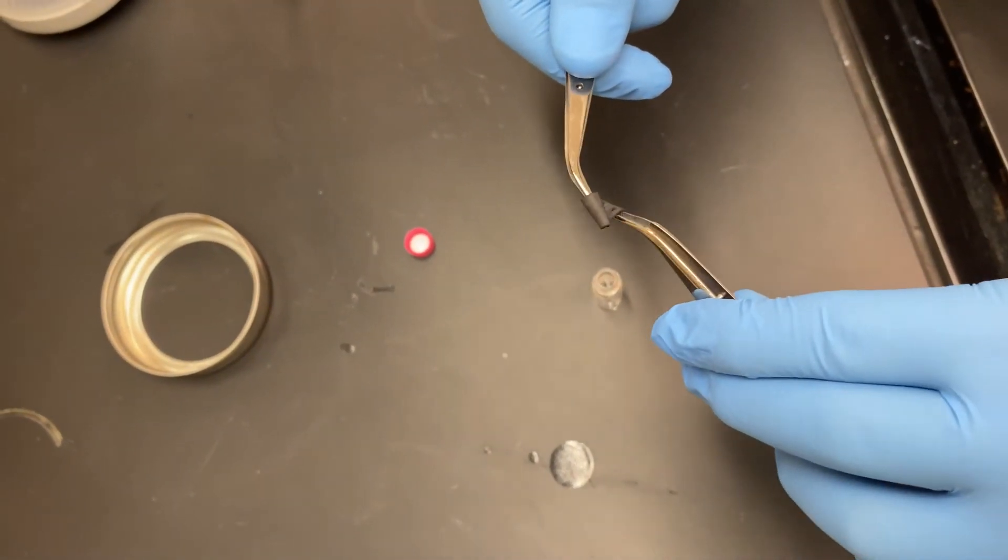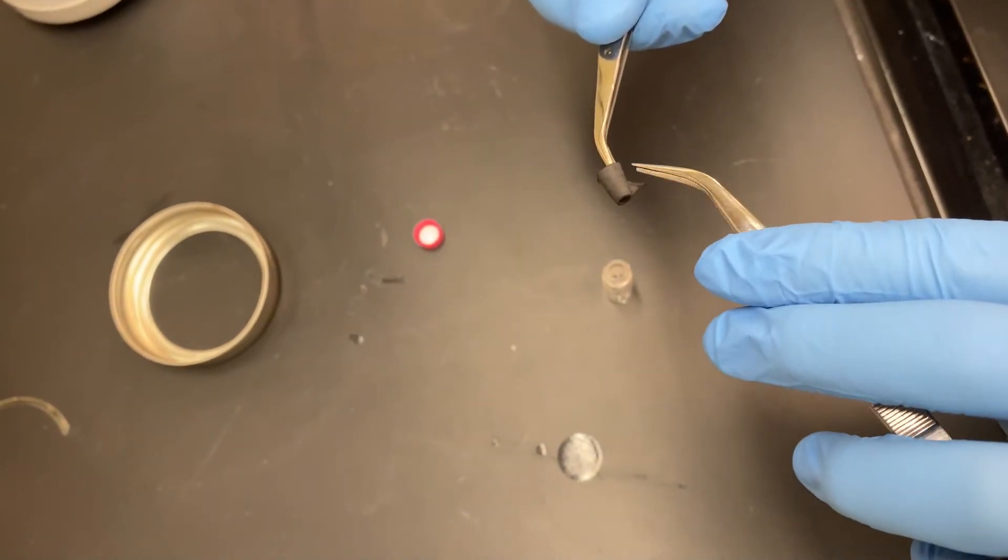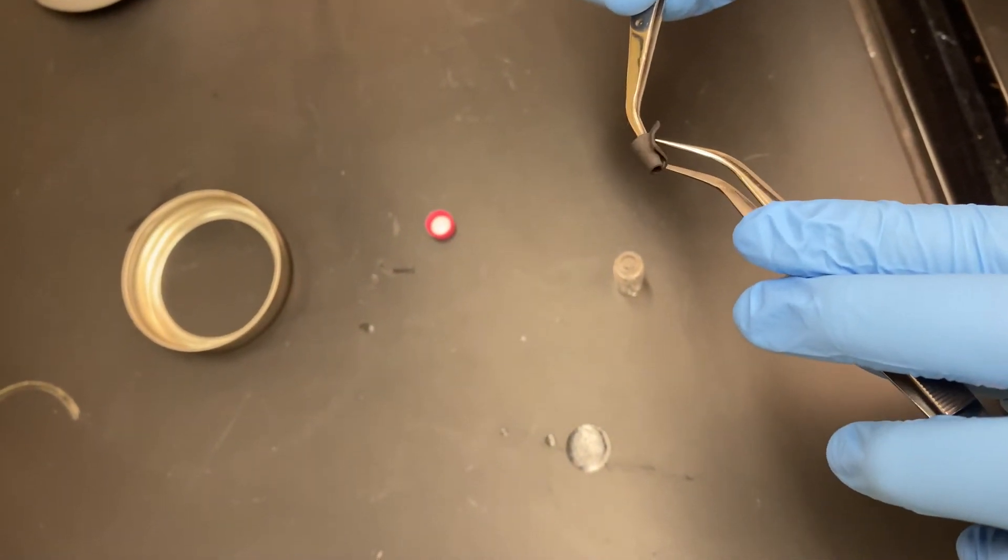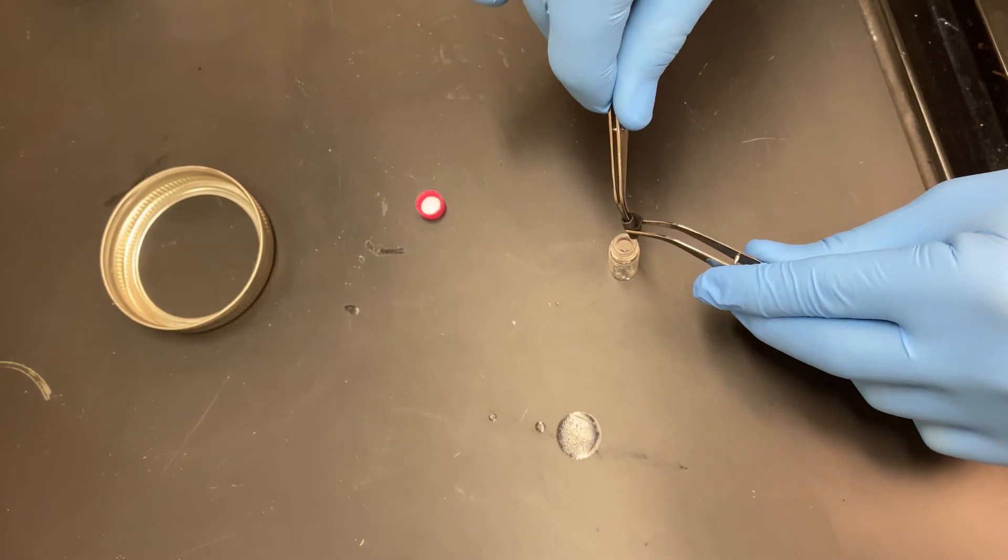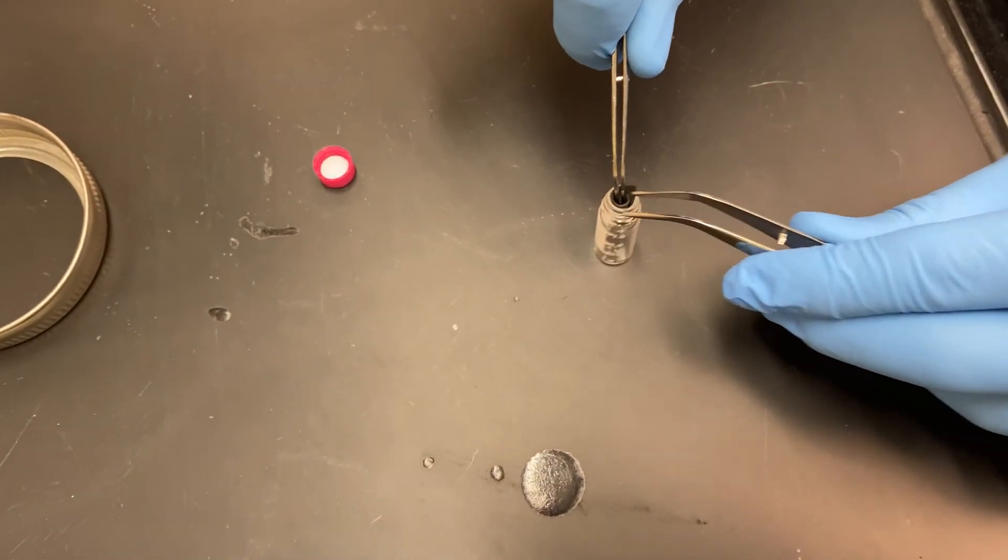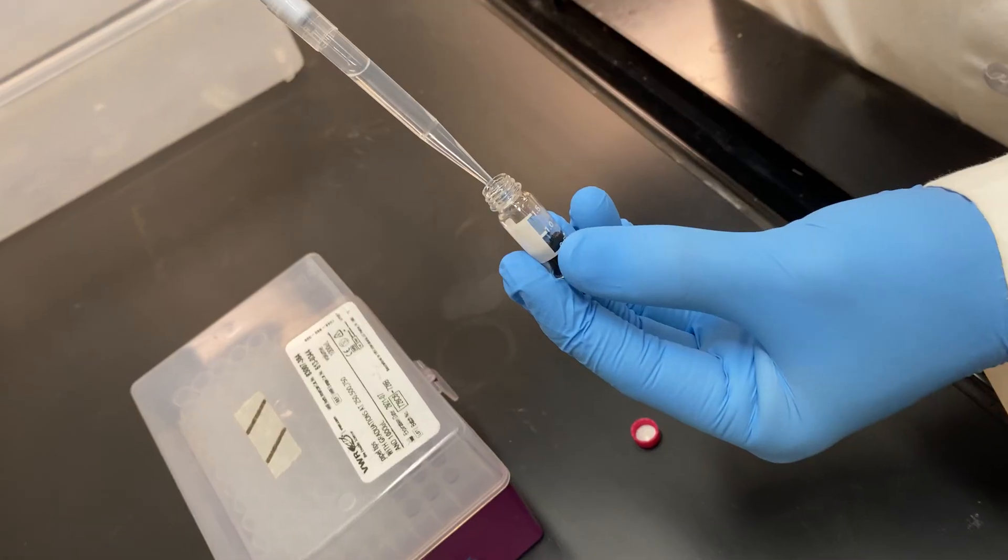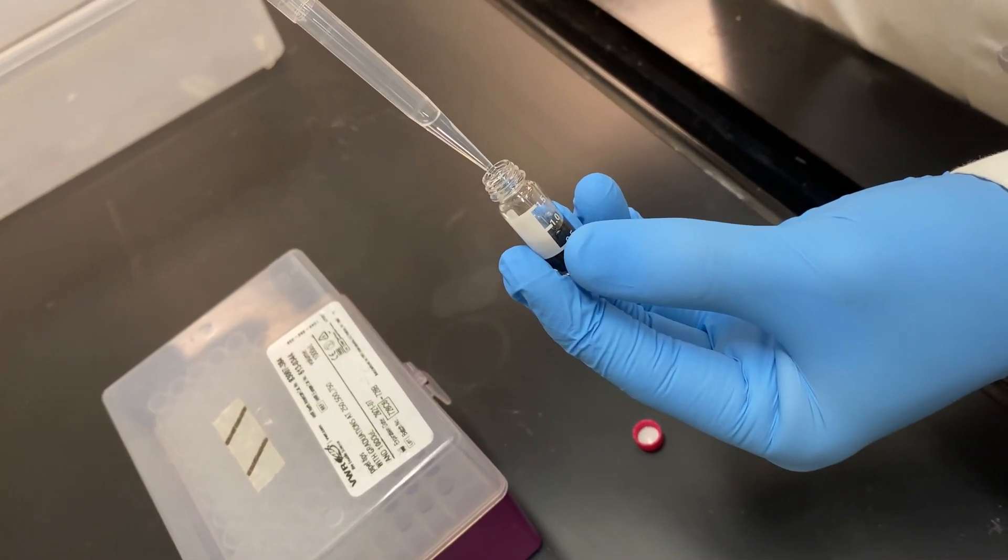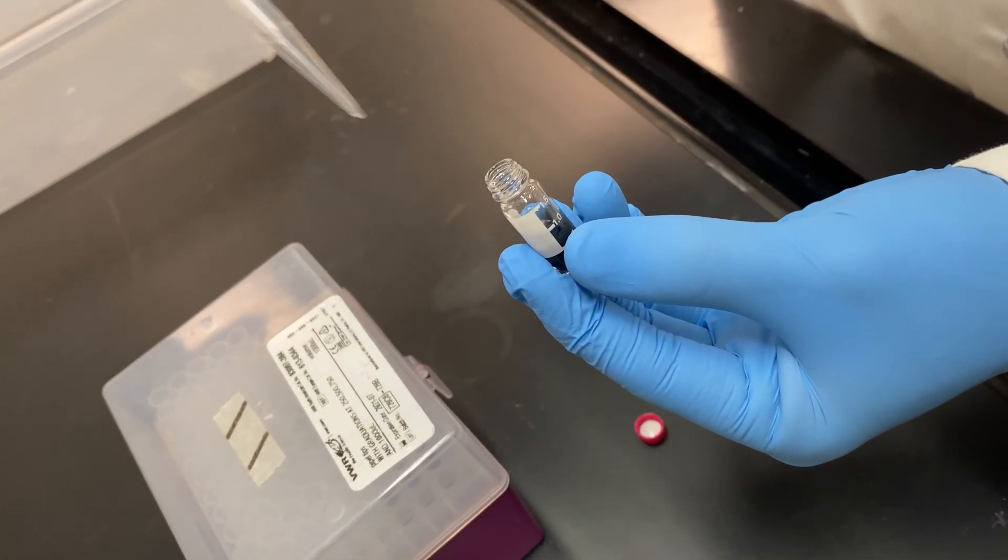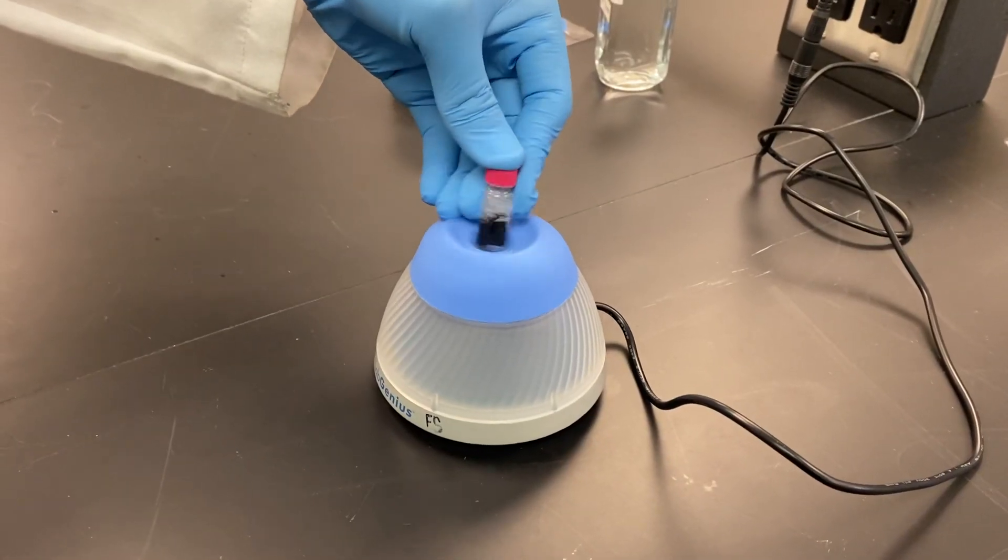Place the activated charcoal strip into a labeled 2 milliliter GC vial. You will need to curve or roll the strip in order to fit it into the vial. It's easier to use two tweezers to do so. Once the charcoal strip is in the vial, add 1.8 milliliters of dichloromethane and then vortex briefly.